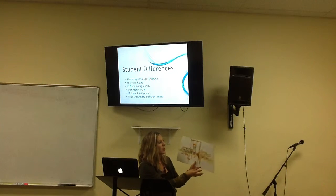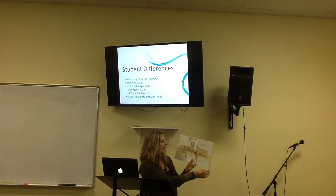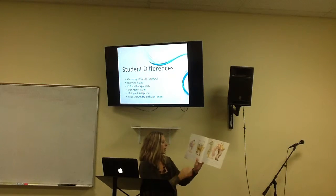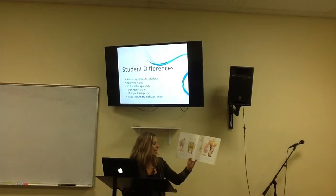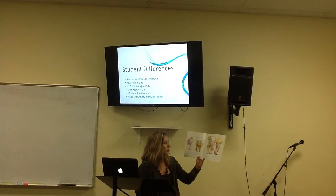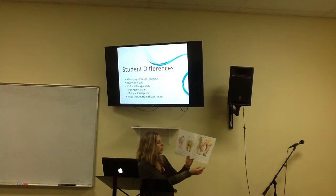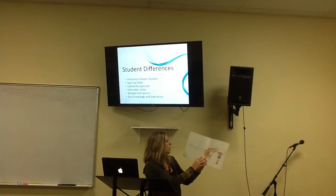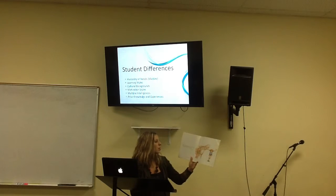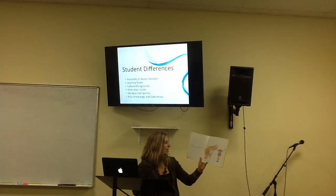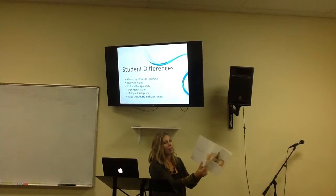There once was a small boy called Wilford Gordon McDonald Partridge, and what's more, he wasn't very old either. His house was next door to an old people's home, and he knew all the people who lived there. He liked Mrs. Jordan who played the organ, listened to Mr. Hosking who told him scary stories, played with Mr. Tippett who was crazy about cricket, ran errands for Miss Mitchell who walked with a wooden stick, and admired Mr. Drysdale who had a voice like a giant. But his favorite person of all was Miss Nancy Allison Delacorte Cooper, because she had four names just as he did. He called her Miss Nancy and told her all of his secrets.